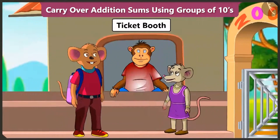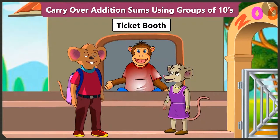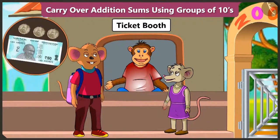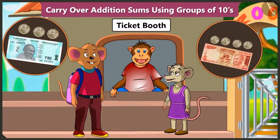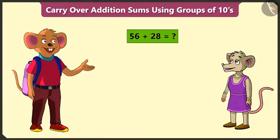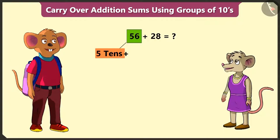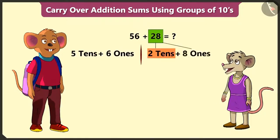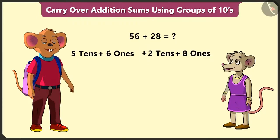Do we have to buy a ticket here also? Yes. Bhaiya, please give us 2 tickets. Your ticket will cost 56 rupees and the younger child's ticket will cost 28 rupees. Chichi, now tell me how much money do we have to pay in total? 56 is 5 tens and 6 ones, and 28 is 2 tens and 8 ones. Well done.